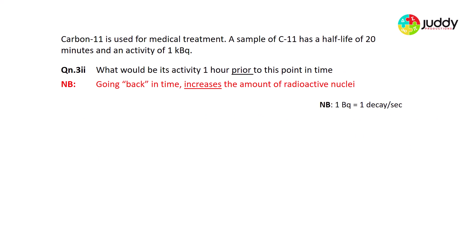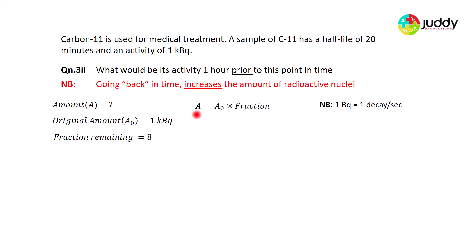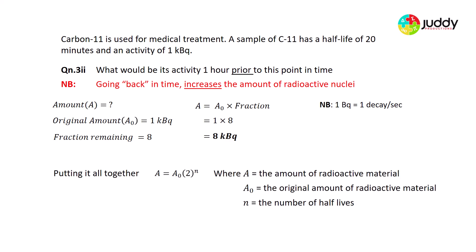Question 3.2: what would the activity of Carbon-11 be one hour prior? The current activity is 1 kilobecquerel and the factor is 8. Original activity = 1 kilobecquerel × 8 = 8 kilobecquerel. When traveling back in time, instead of multiplying by (½)^n (which halves each half-life), we multiply by 2^n, which doubles the number of nuclei and activity for each half-life prior.